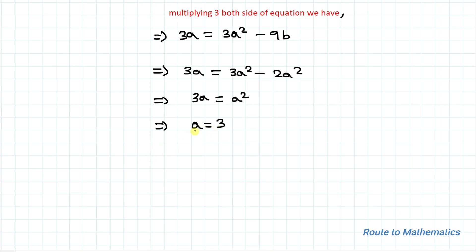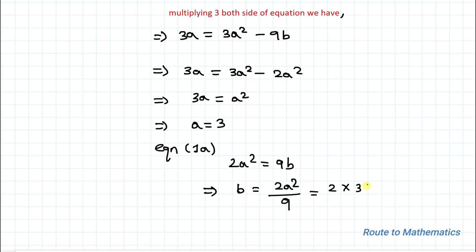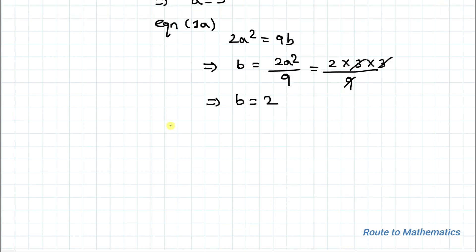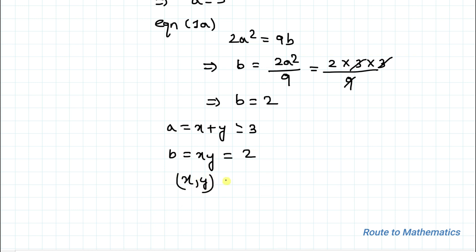Now we find b by substituting a = 3 into Equation 1a: 2a² = 9b, so b = 2a² / 9 = 2 × 9 / 9 = 2. Therefore a = x + y = 3 and b = xy = 2. From these, we can determine that x and y are either (1, 2) or (2, 1), which is our answer.